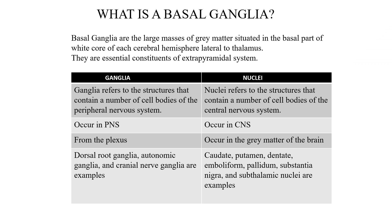First of all, what is basal ganglia? Basal ganglia are the large masses of grey matter situated in the basal part of the white core of each cerebral hemisphere, lateral to the thalamus. They are essential constituents of the extrapyramidal system.